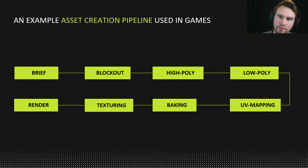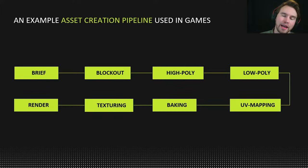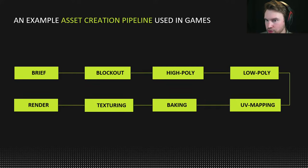Let's move on to actual asset creation. Here's an example of what an asset creation pipeline used in games can look like. At the start you have the brief stage — deciding what you are making. Then you do a blockout of the asset, then a high poly, then low poly, UV map the low poly, bake the low poly, texture it, and ultimately do a render or import it into the game.